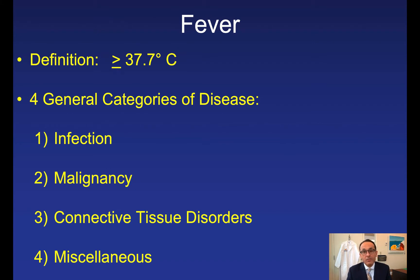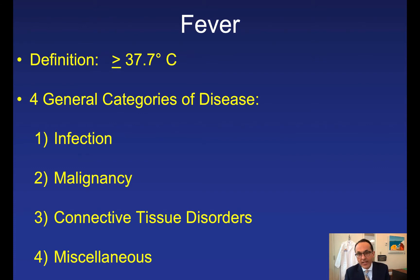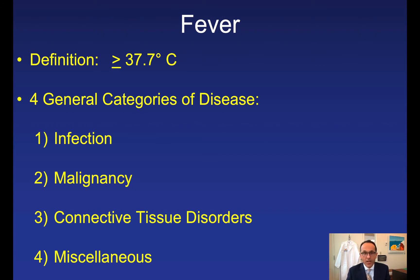Malignancy is the second most common cause of fever in most case series, and there are many different types we'll discuss. Connective tissue disorders — especially vasculitis, lupus, and rheumatoid arthritis — can also give rise to fever. Miscellaneous causes such as drug fever, DVT, or factitious causes should also be considered.